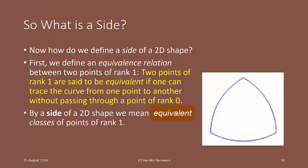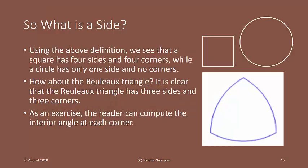By a side of a 2D shape, we mean equivalent classes of points of rank 1. So, in this picture, A and B are equivalent, but A is not equivalent to C. There are three equivalent classes here. So, what is a side?